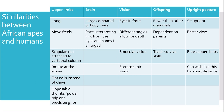The brain is large compared to body mass, and parts interpreting information from the eyes and hands are enlarged. For vision, the eyes are in the front at different angles allowing for depth — they have binocular and stereoscopic vision. They have fewer offspring than other mammals, who are dependent on parents and taught survival skills. Their upright posture provides a better view, frees the upper limbs, and they can walk upright for short distances.